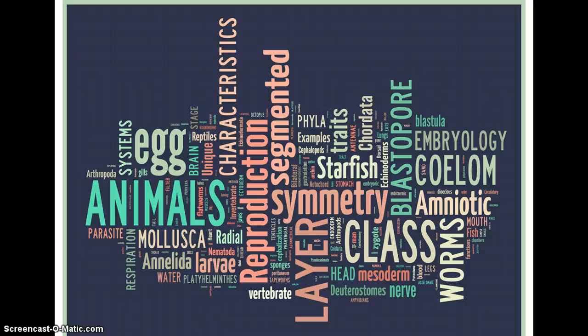We're now beginning our study of the animal kingdom. When we study the animal kingdom, it helps us to learn some things about what makes them animals and some of the similarities that all animals have to each other. We begin this by learning about the basic development of animals from single-celled zygotes into multicellular organisms, and some things about how their body plans determine how they relate to each other. So we'll first talk about embryo development.